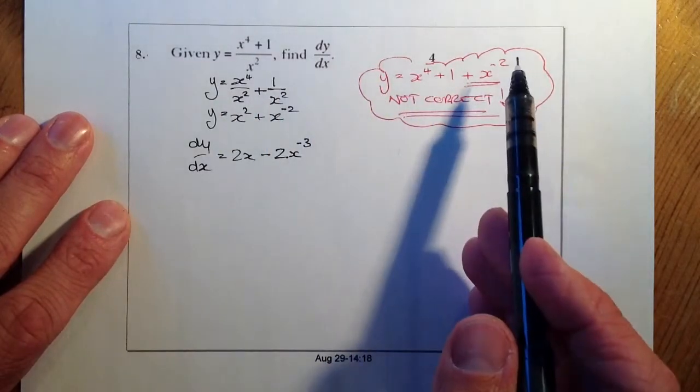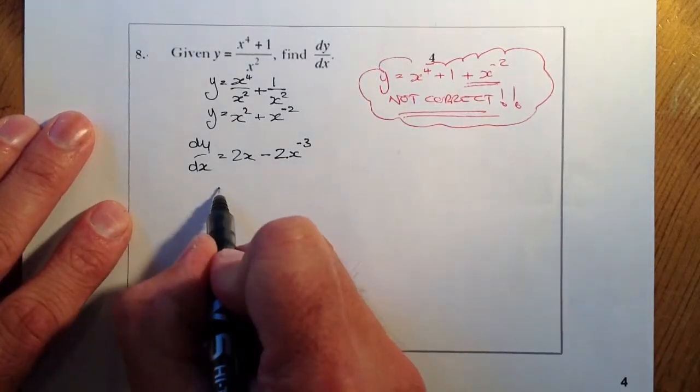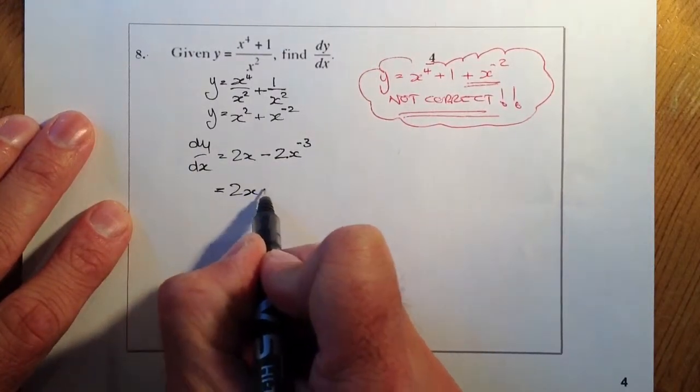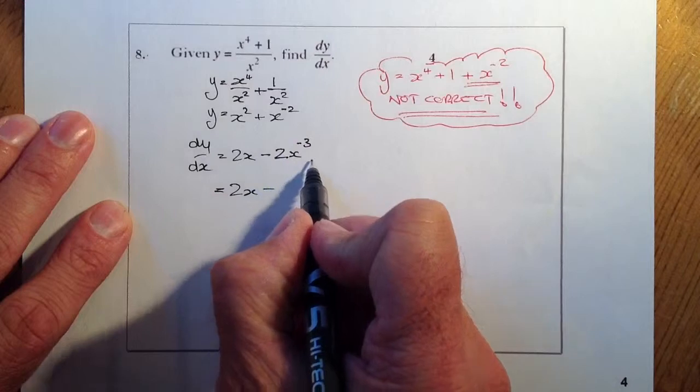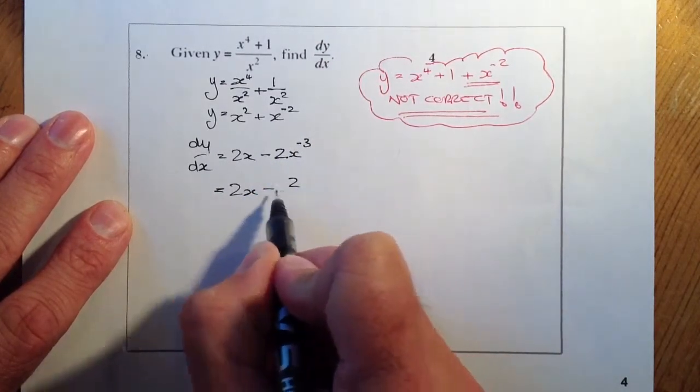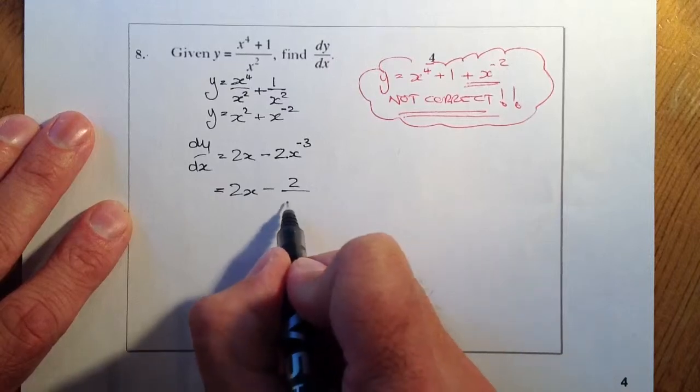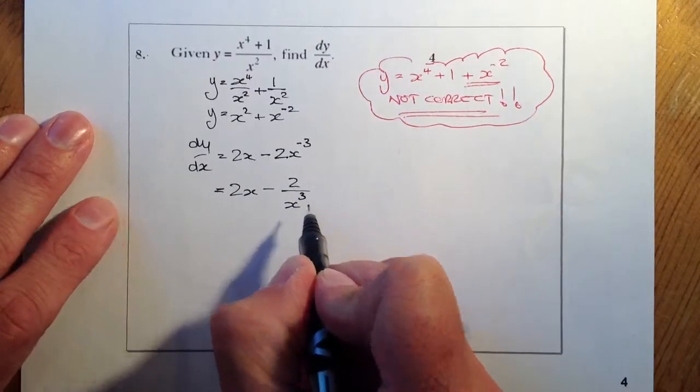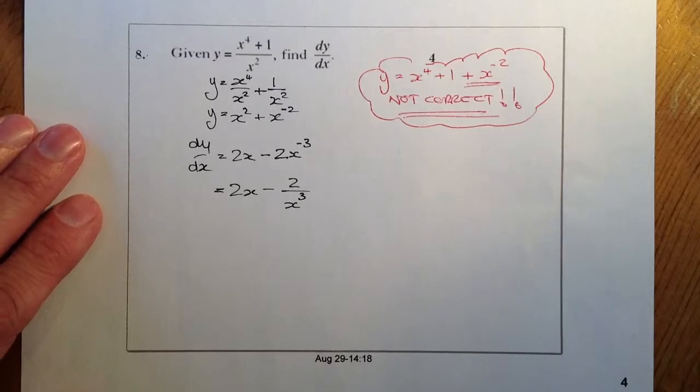I haven't asked you to show it with a positive index, but if that was the case, we would grab this part here, the x to the minus 3, take it down to the denominator and that would go to x to the power of a positive 3. And that would be my final answer.